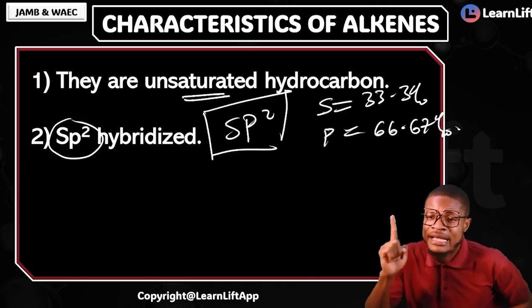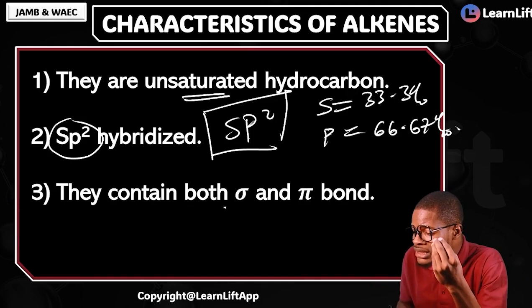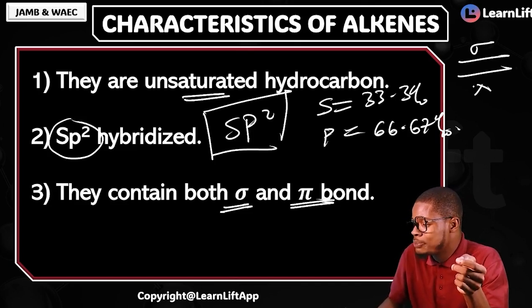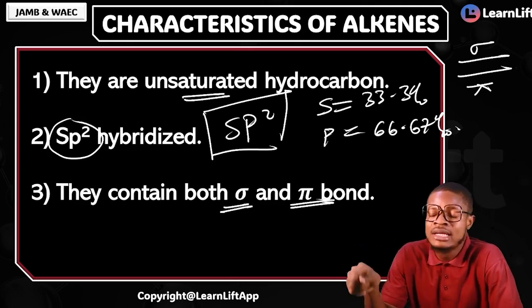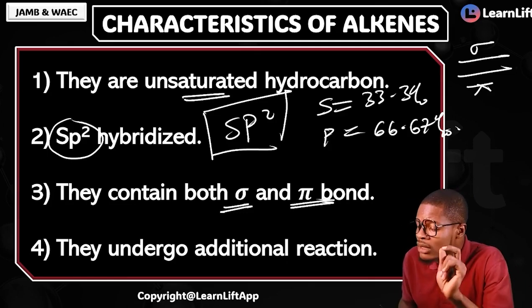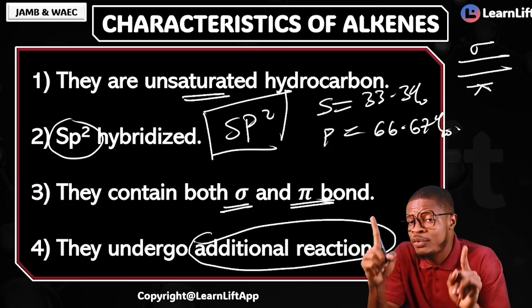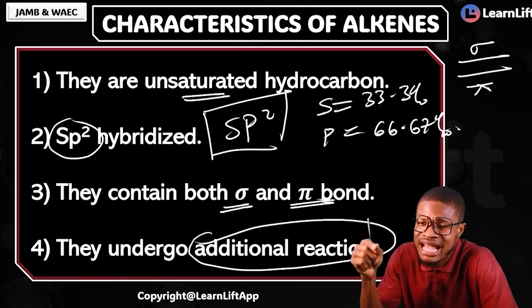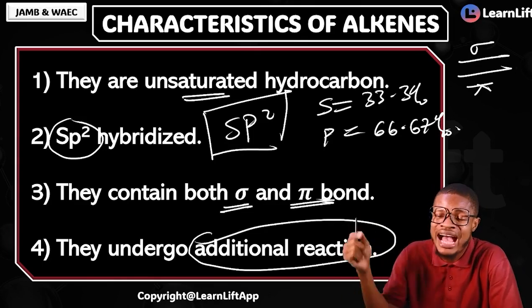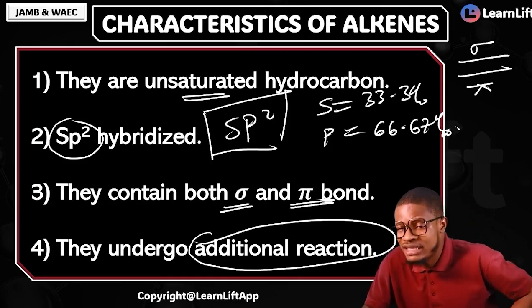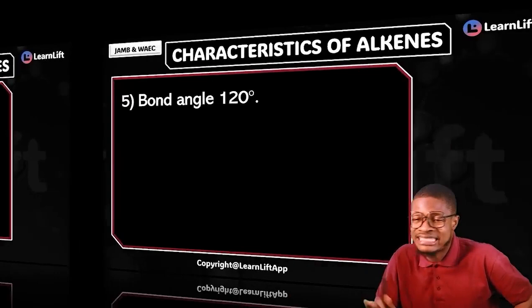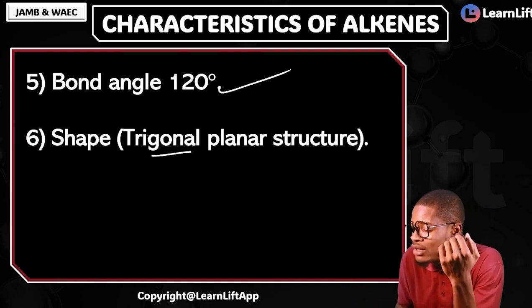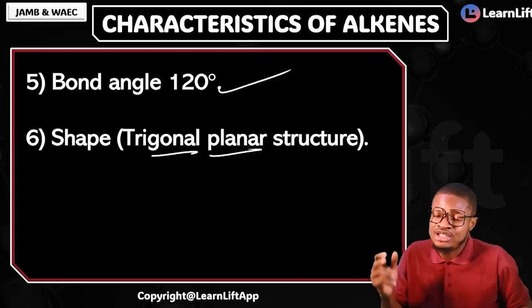Another sweet thing about your alkenes' double bond is that they contain both a sigma bond and a pi bond. I told you that where you have a double bond, one of them is a sigma bond and the other one is a pi bond. Sigma bond is stronger than pi bond. Number four: they undergo addition reactions. Alkanes with single bonds undergo substitution reactions. Alkenes with double bonds and alkynes with triple bonds undergo addition reactions. Another characteristic: their bond angle is 120 degrees, and their shape is trigonal planar.